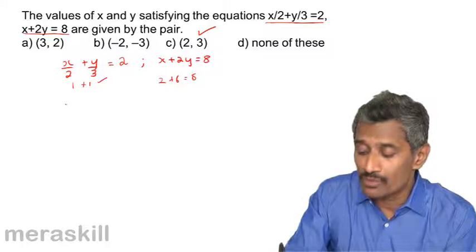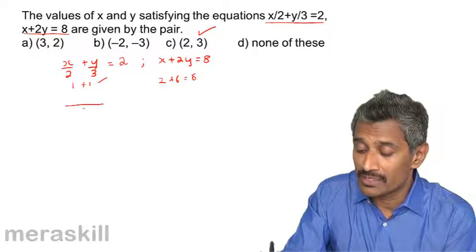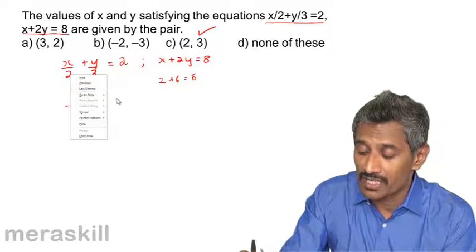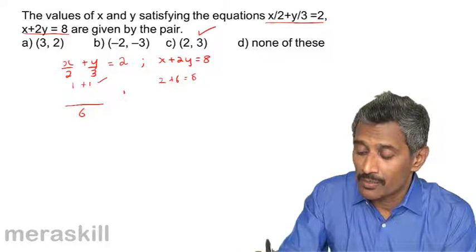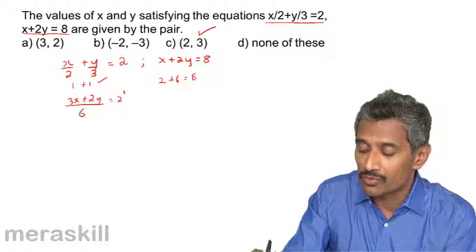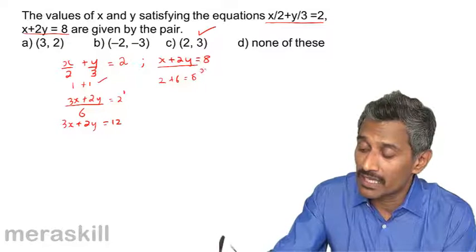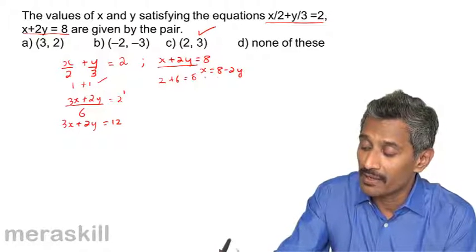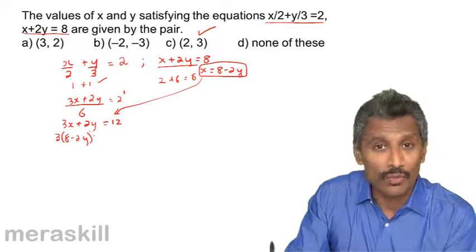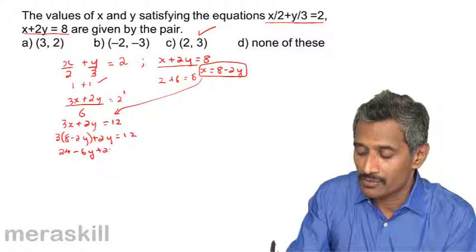Suppose you want to solve it by the elimination method: multiply the first equation through by 6 — 6 by 2 is 3, 6 by 3 is 2 — so you get 3x plus 2y equals 12. From the second equation x plus 2y equals 8, we can write x as 8 minus 2y. Substitute into 3x plus 2y equals 12: 3 times (8 minus 2y) plus 2y equals 12, giving 24 minus 6y plus 2y equals 12.